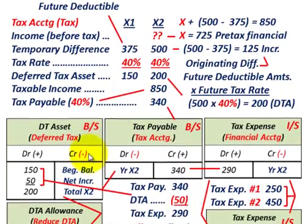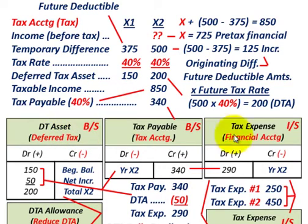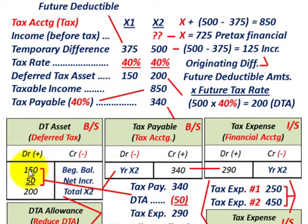Now let's look at how we would record this. Before we move into the valuation allowance account, let's look at how we'd record our tax expense on the income statement for year X2. The deferred tax asset is going to reduce your tax expense. We're going to have a total deferred tax asset for year X2 of $200,000, but we have to start with our beginning balance of $150,000.